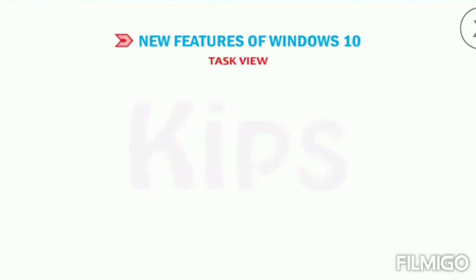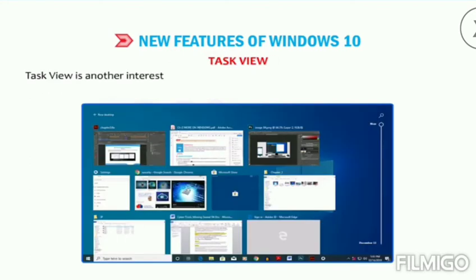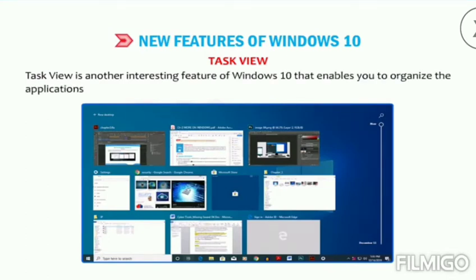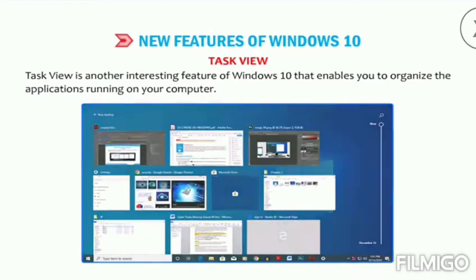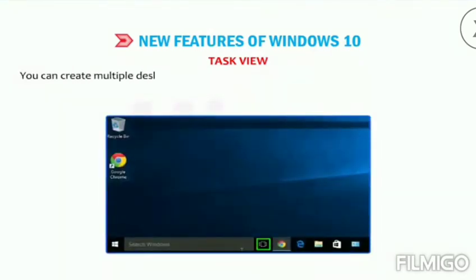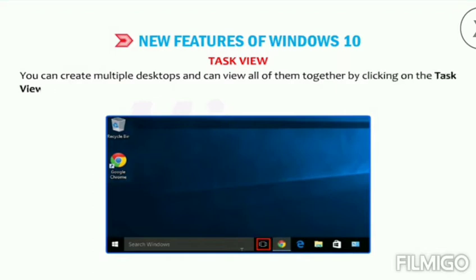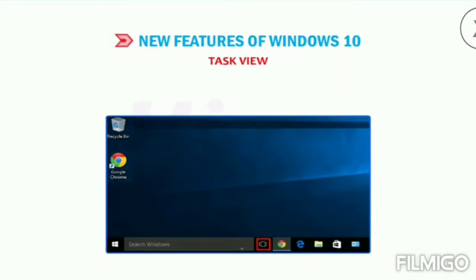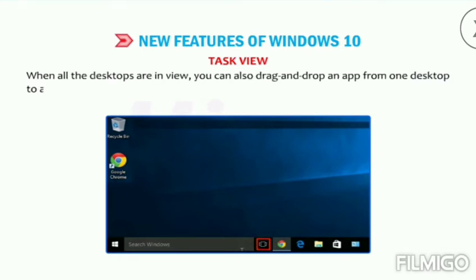Task View is another interesting feature of Windows 10 that enables you to organize the applications running on your computer. You can create multiple desktops and view all of them together by clicking on the Task View button located on the taskbar. When all the desktops are in view, you can also drag and drop an app from one desktop to another.